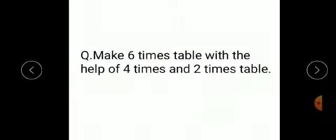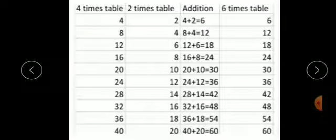See one example: make the 6 times table with the help of the 4 times and 2 times table. Here, 6 equals 4 plus 2. Since 4 plus 2 gives us 6, we can make the 6 times table by adding the 4 times and 2 times tables. Also, 5 plus 1 equals 6, so by adding the table of 5 and table of 1 you can also make the table of 6.